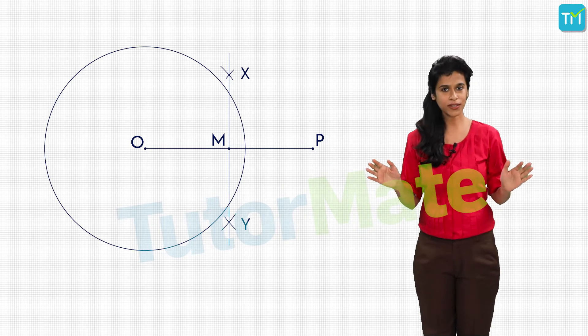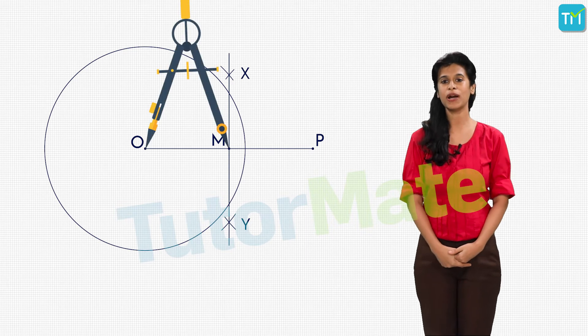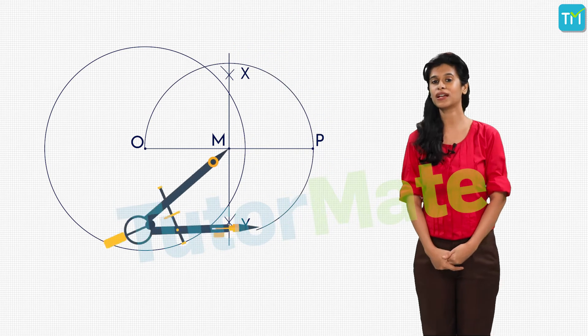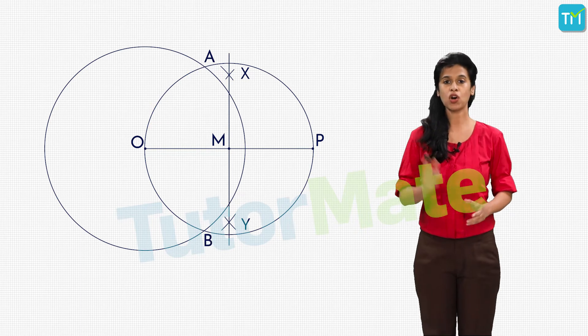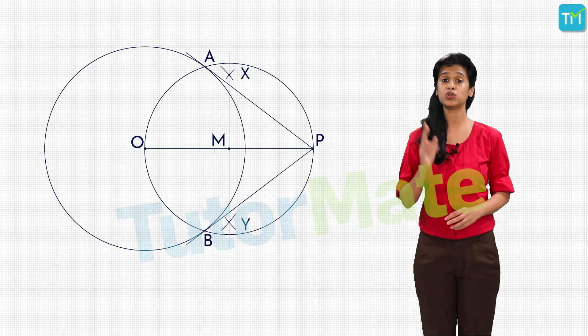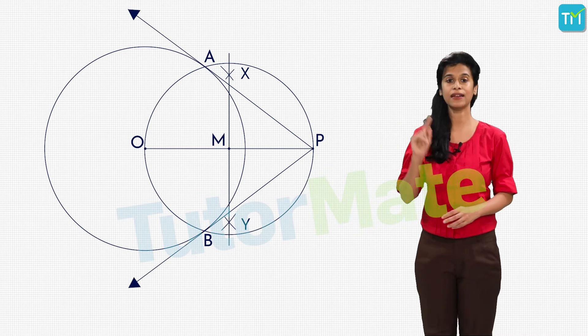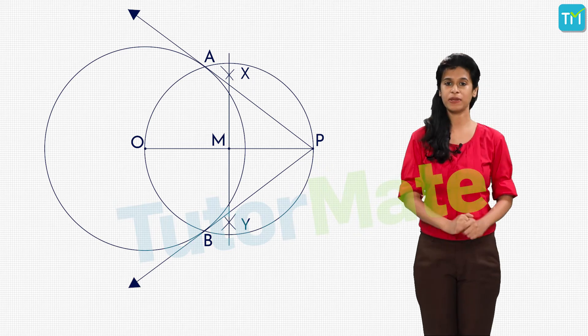Okay, next, taking M as a center and OM as radius, draw a circle. Let the new circle cut the original circle at points A and B. Join PA and PB. PA and PB are the two tangents to the circle from point P lying outside the circle. Now measure the lengths of PA and PB.